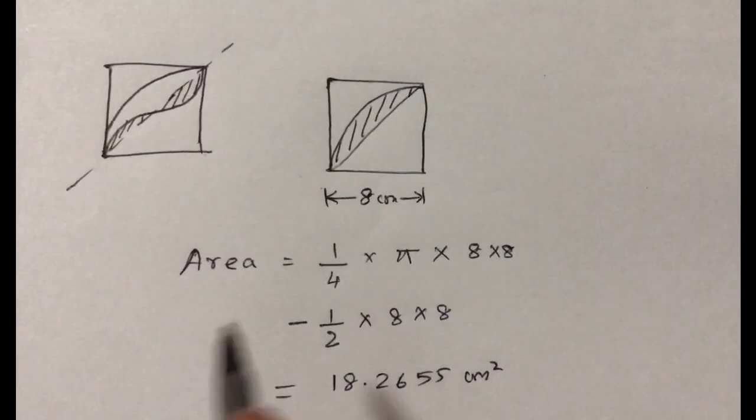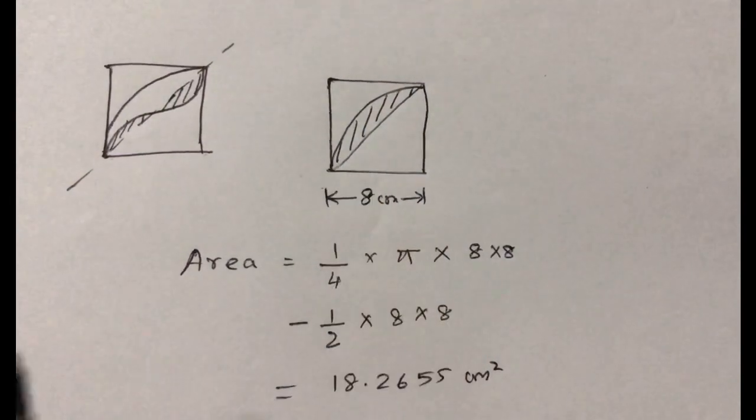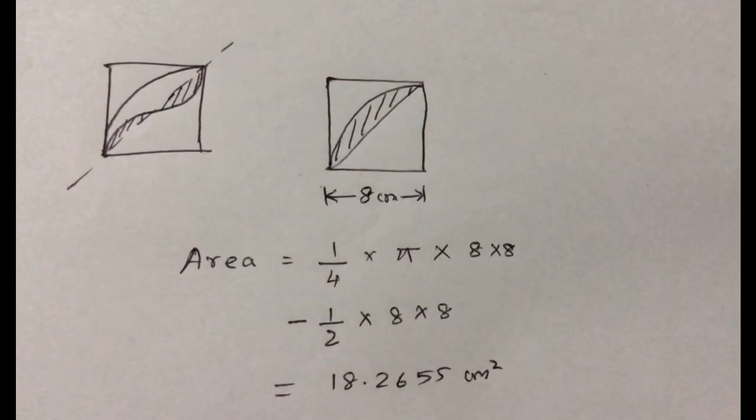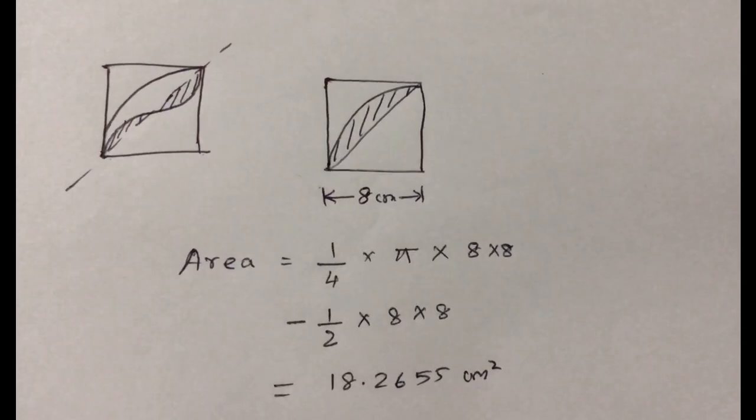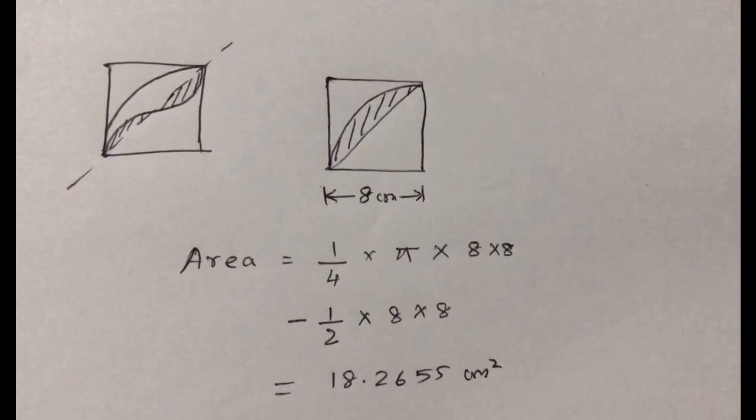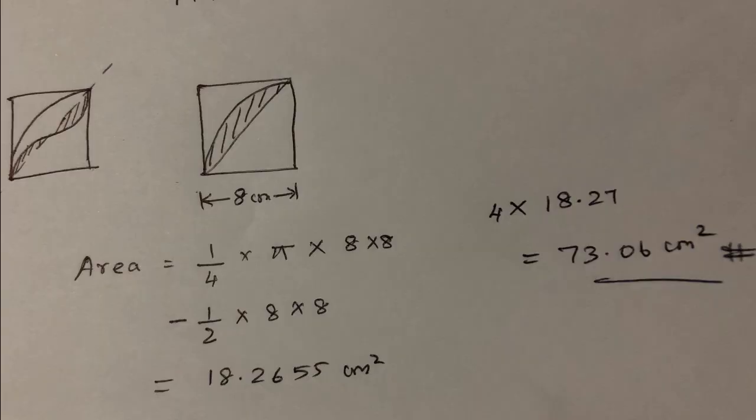So the area of the full shaded portion, as per the question, all the four such shaded parts would be four times 18.27, which is equal to 73.06 centimeter square.